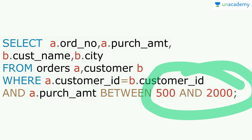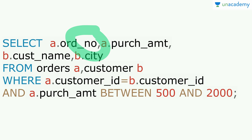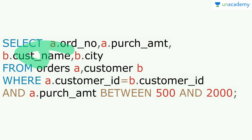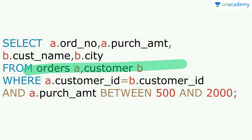We print order number, purchase amount, customer name and city from their respective tables. That is the query for question 2.